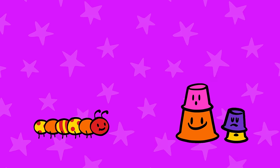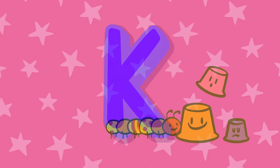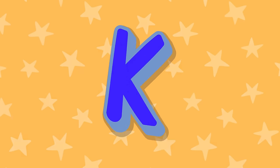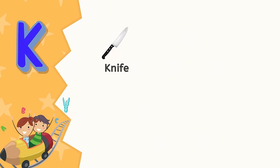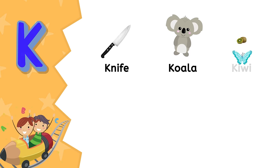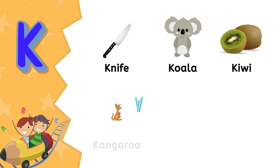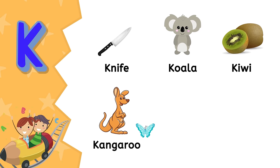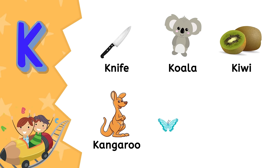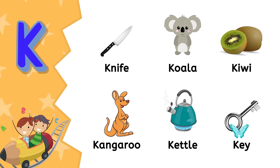Are you enjoying the alphabet learning adventure? K. K is for knife. K is for koala. K is for kiwi. K is for kangaroo. K is for kettle.